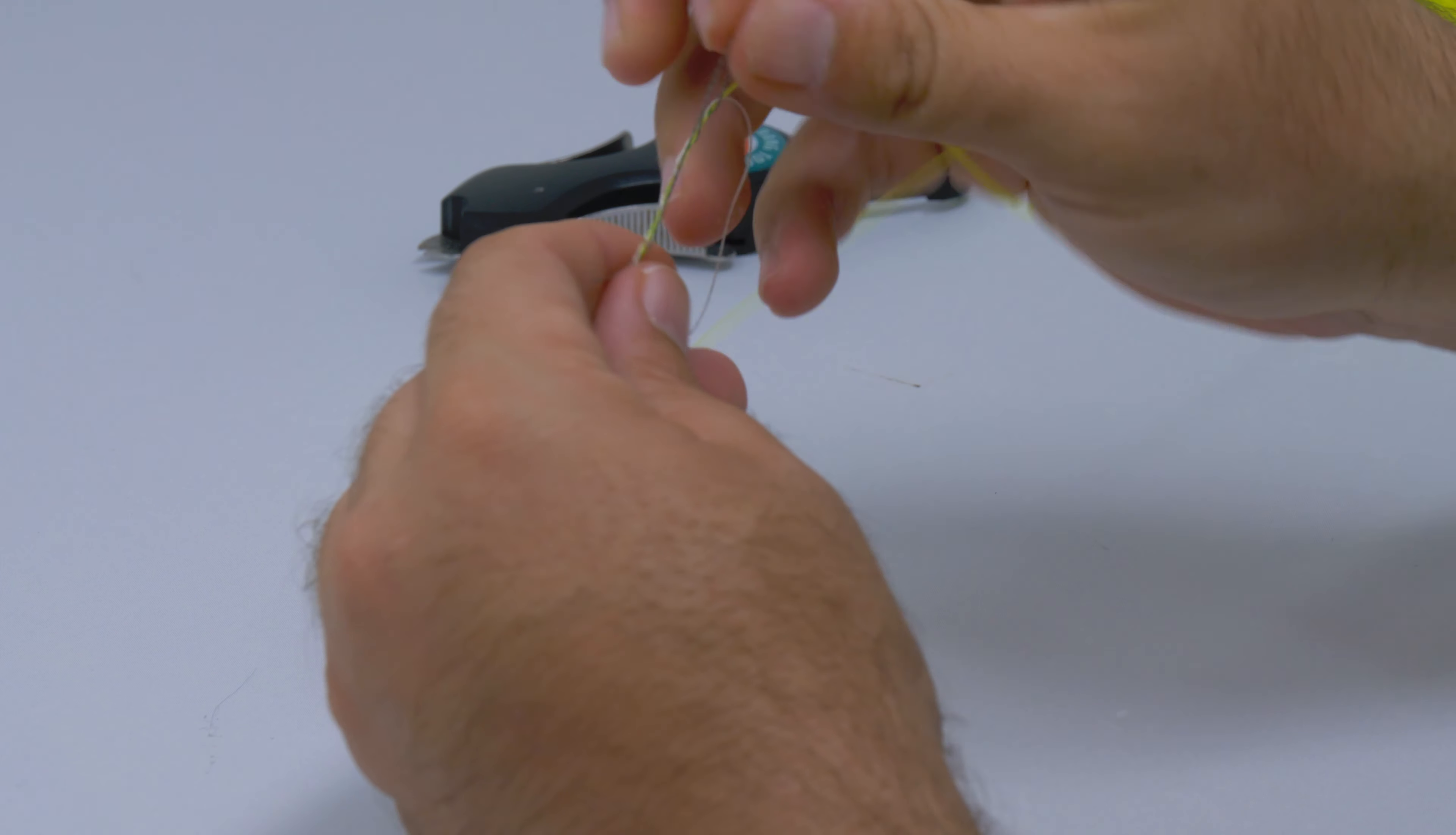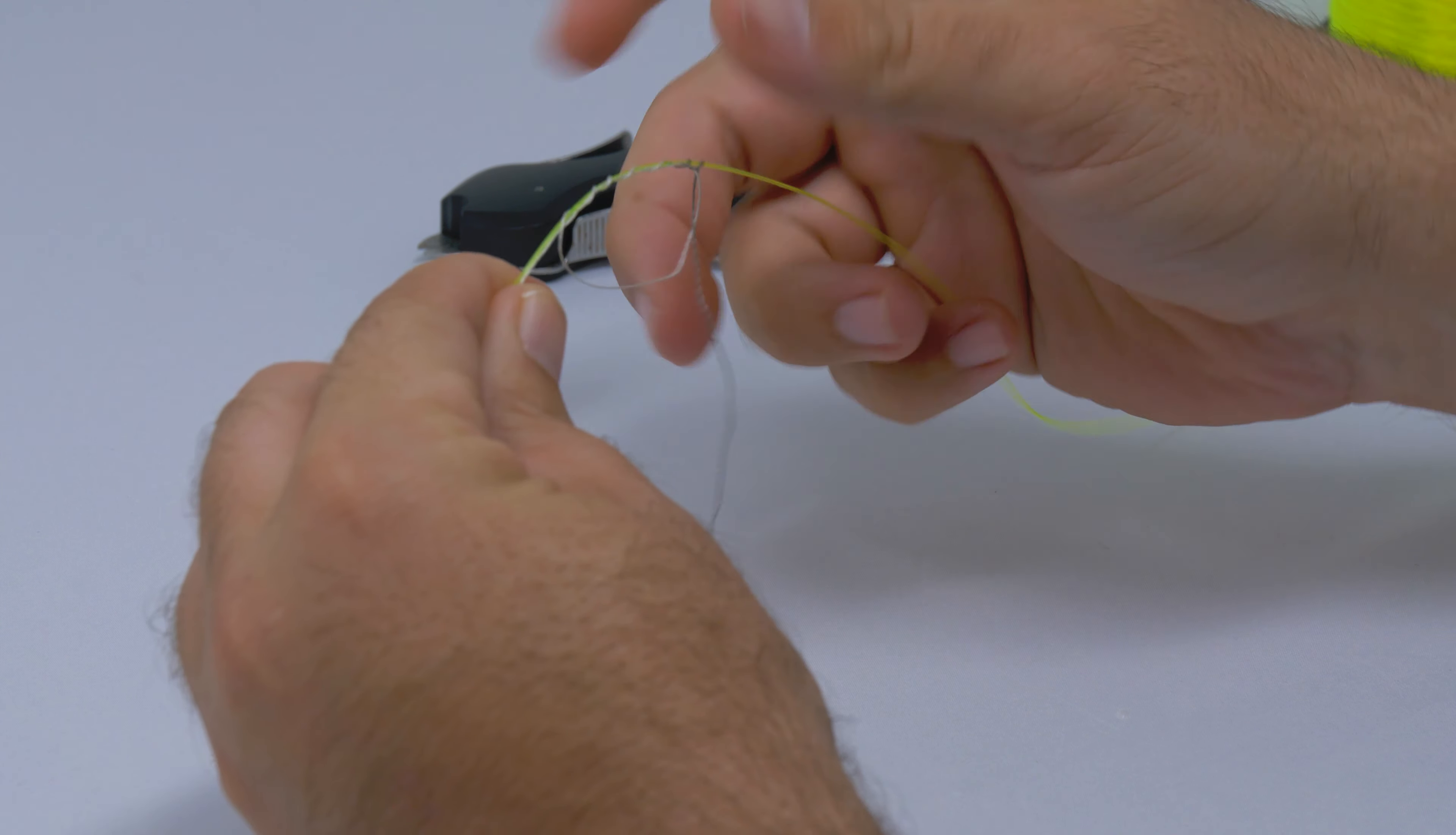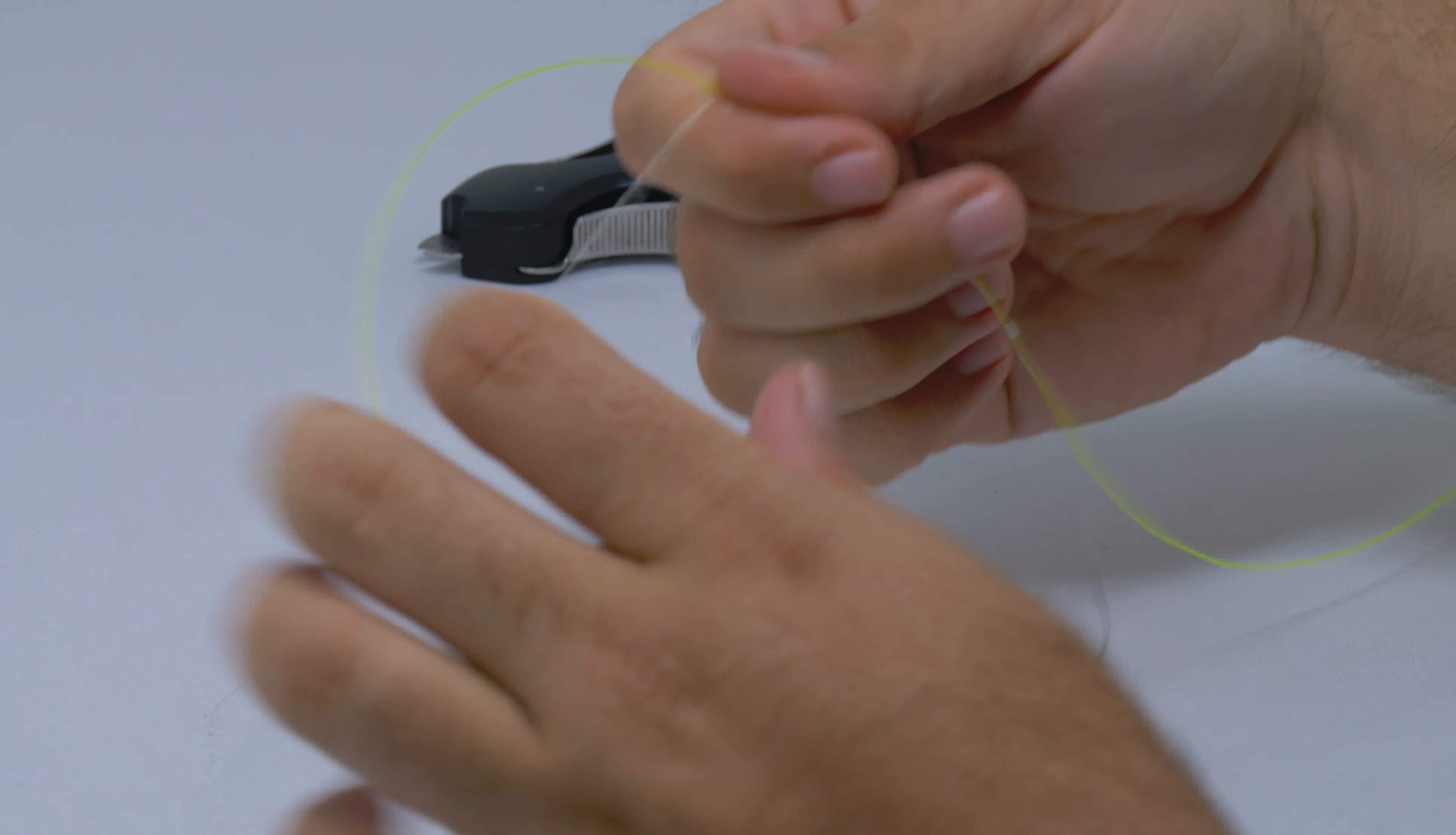You could do a little more, it's not going to hurt you. At that point, you see that I got a perfect loop here. I'm grabbing the tag end of the braid and then the mainline of the braid, and I'm just going to pull this tight. That's going to make a perfect little knot there.